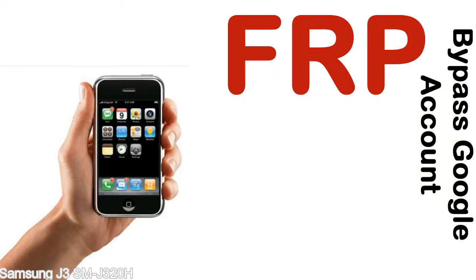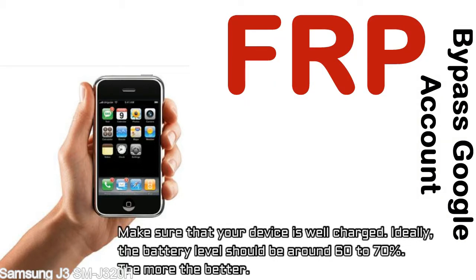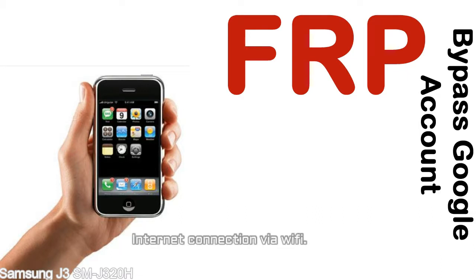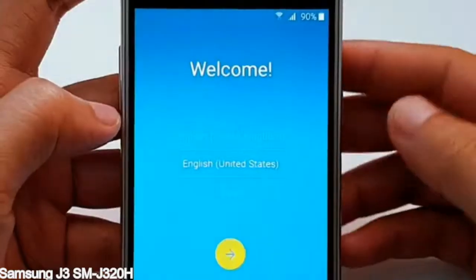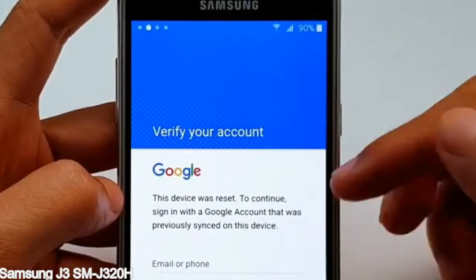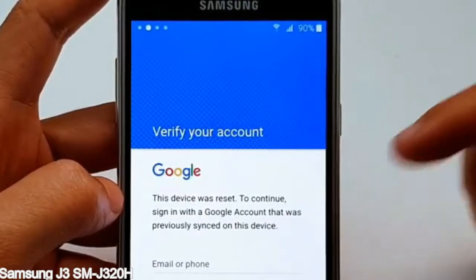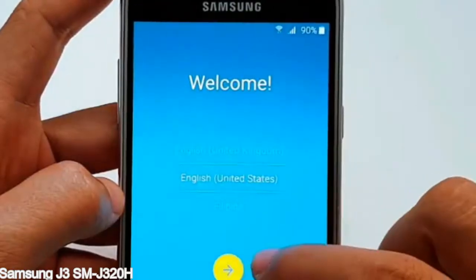Before starting: number one, make sure that your device is well charged. Ideally, the battery level should be around 60 to 70% — the more the better. Number two, internet connection via WiFi. Here is a step-by-step guide on how to bypass Google account on your Samsung Galaxy device.